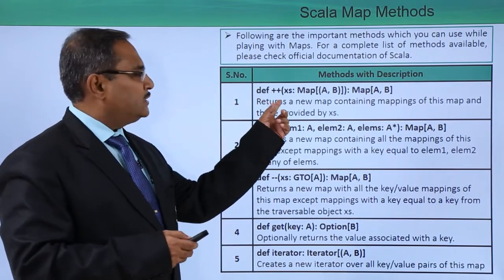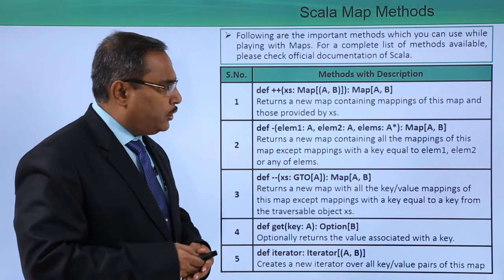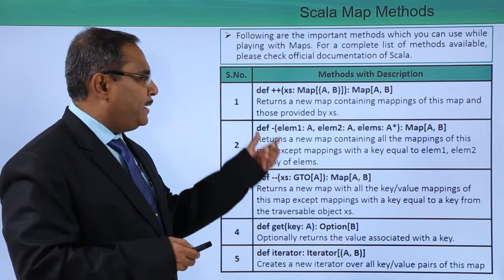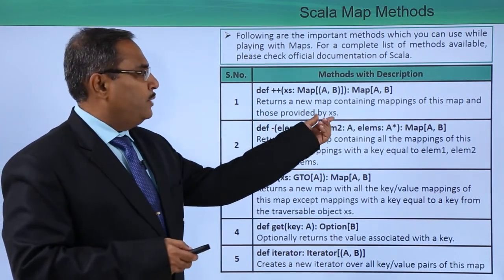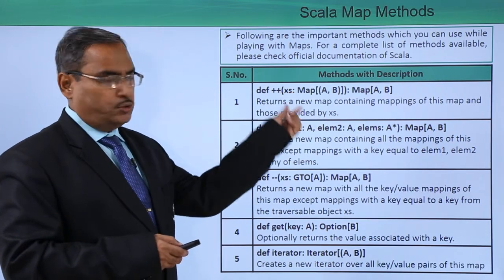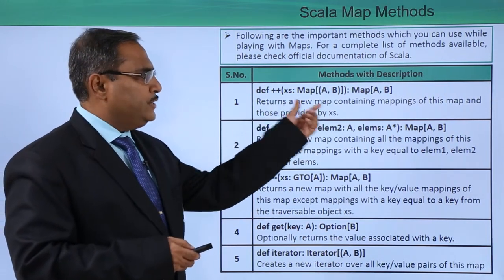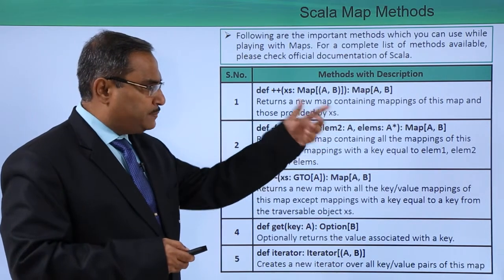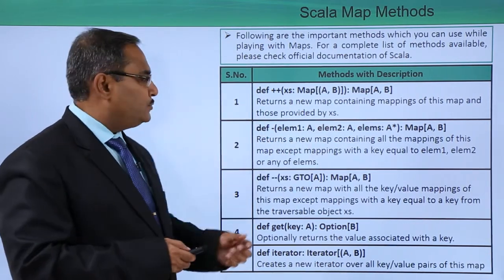First, let us consider the ++ method, which returns a new map containing the mappings of this map and those provided by the argument. So here we are providing some values and they will get added. It returns a new map containing the mappings of this map and those provided by the x values.